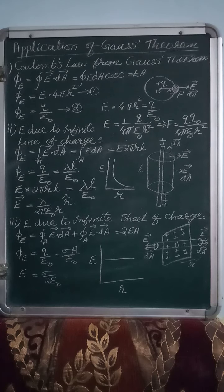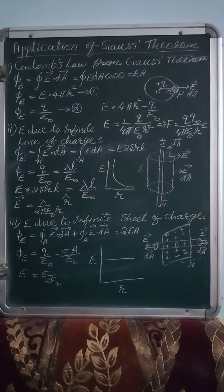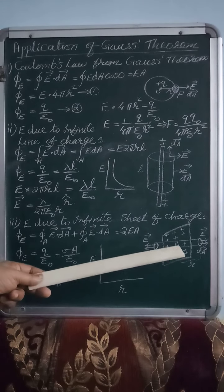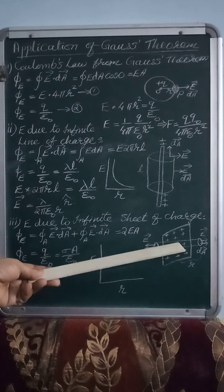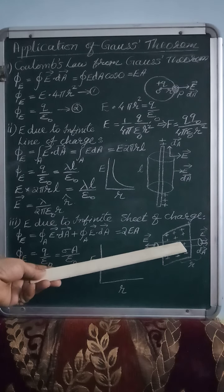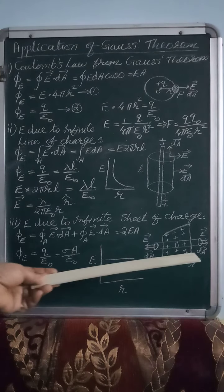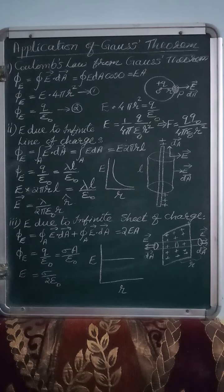Now the third application: the electric field due to an infinite sheet of charge. Charges are placed on a sheet, so let us take a sheet with positive charge. To study the flux, we have considered a cylindrical Gaussian surface. On this cylindrical Gaussian surface, first we take the curved surface of the cylinder. We can see that the electric field vector and the area vector are perpendicular to each other, meaning theta is 90°. So cos 90° = 0, and no flux passes through the curved surface.